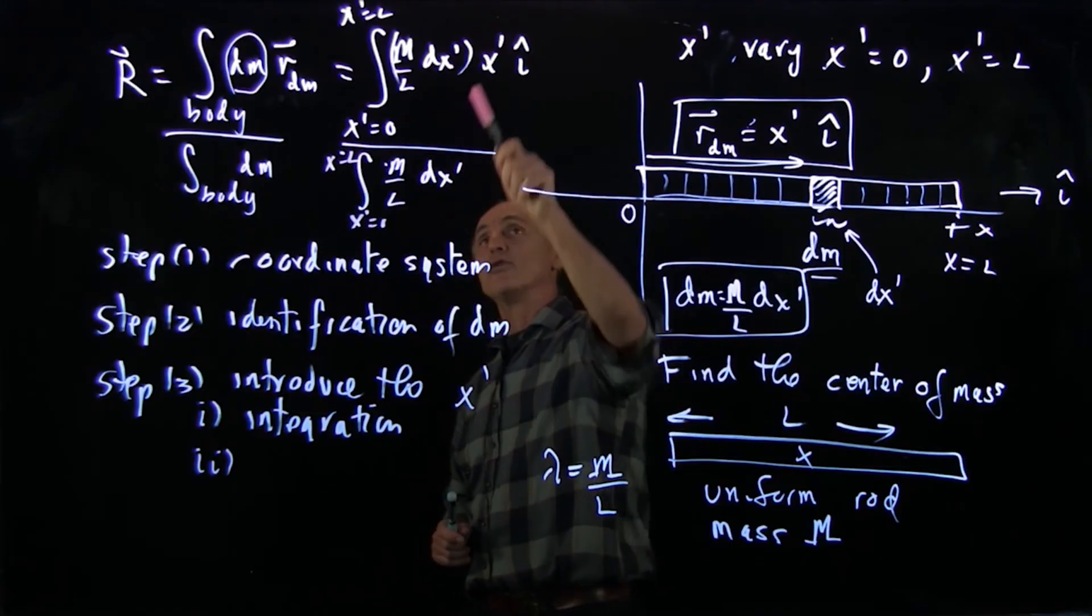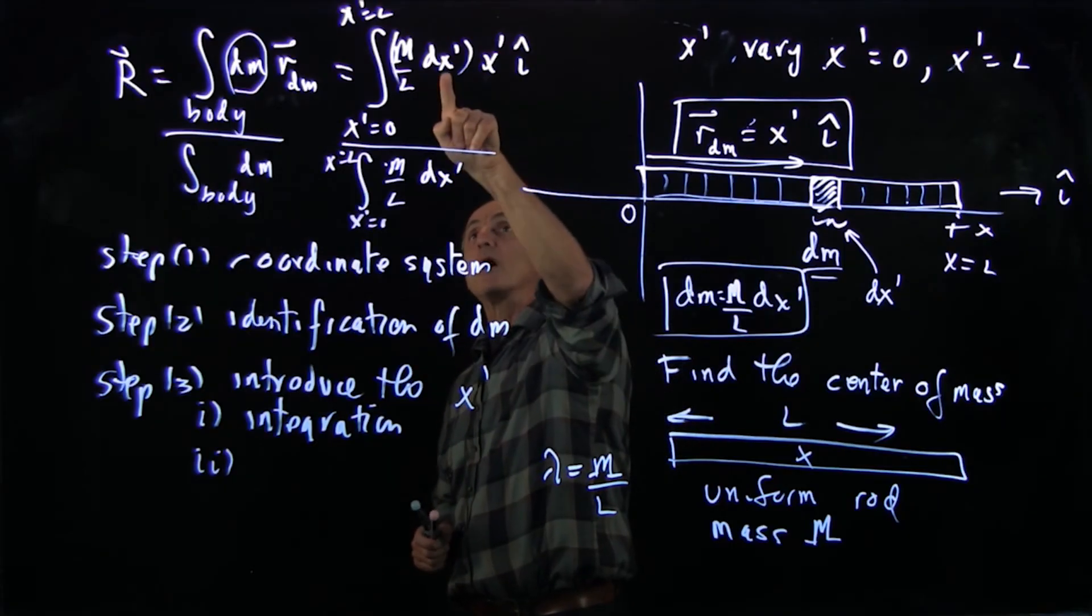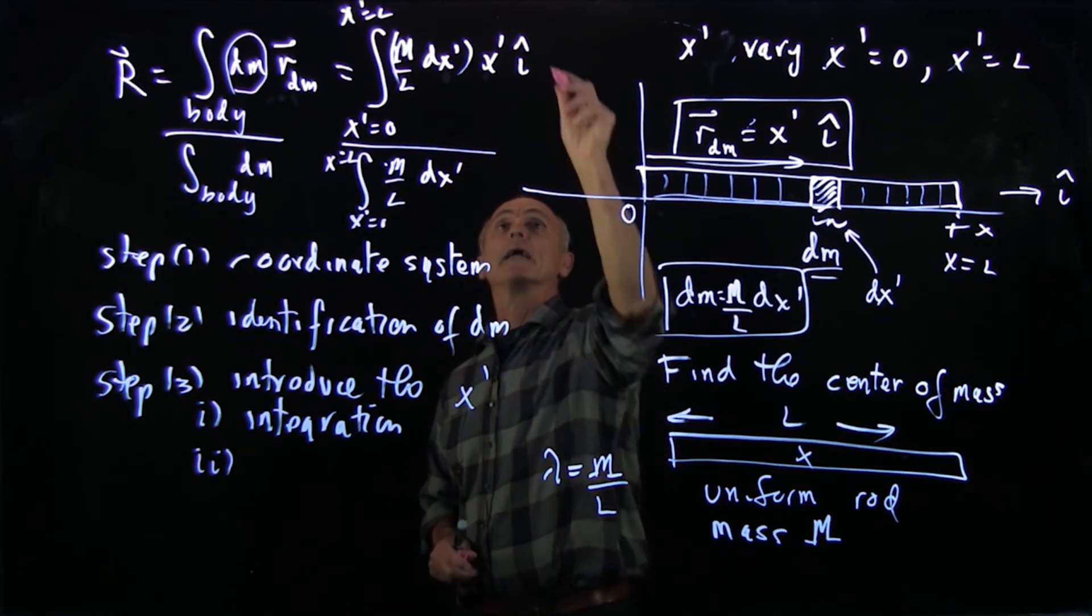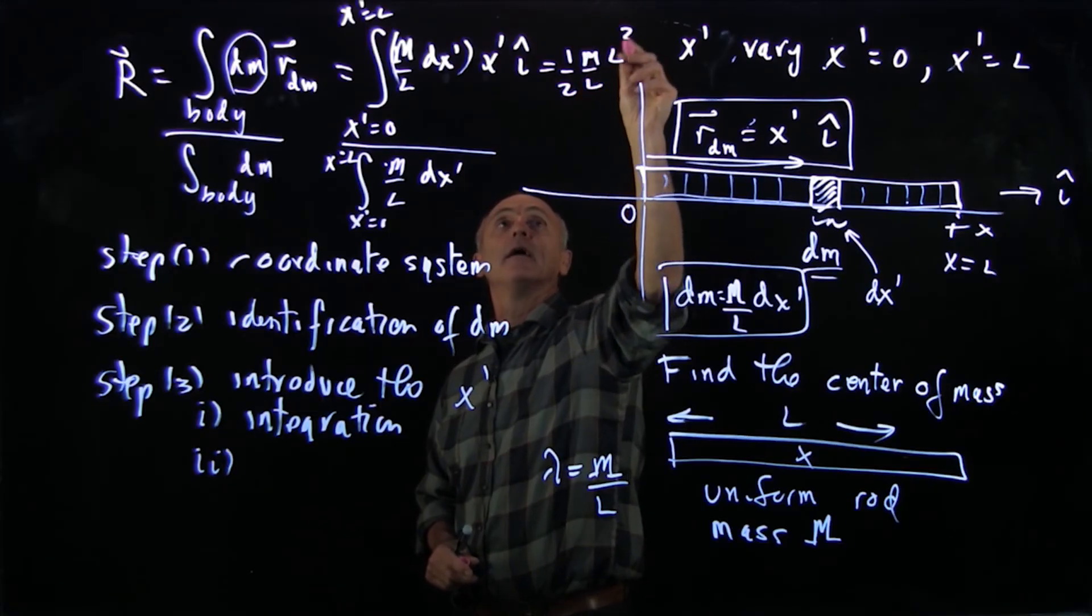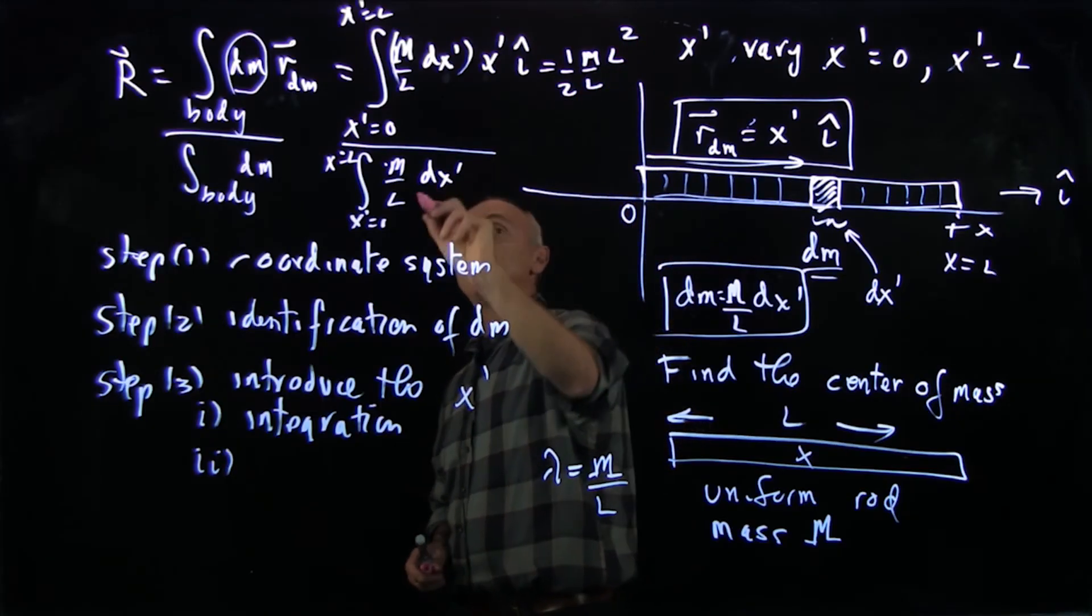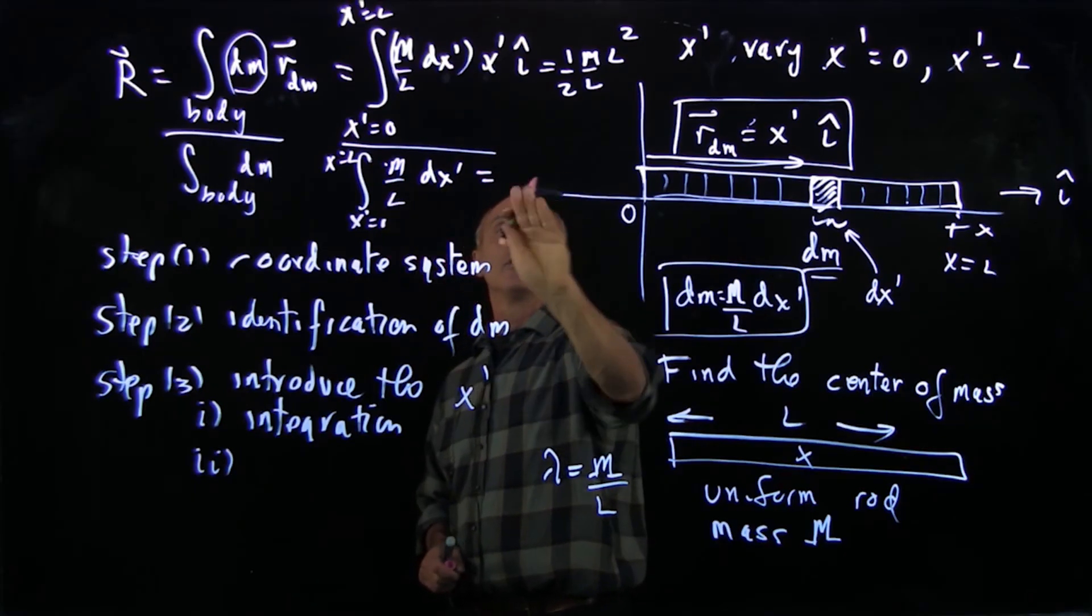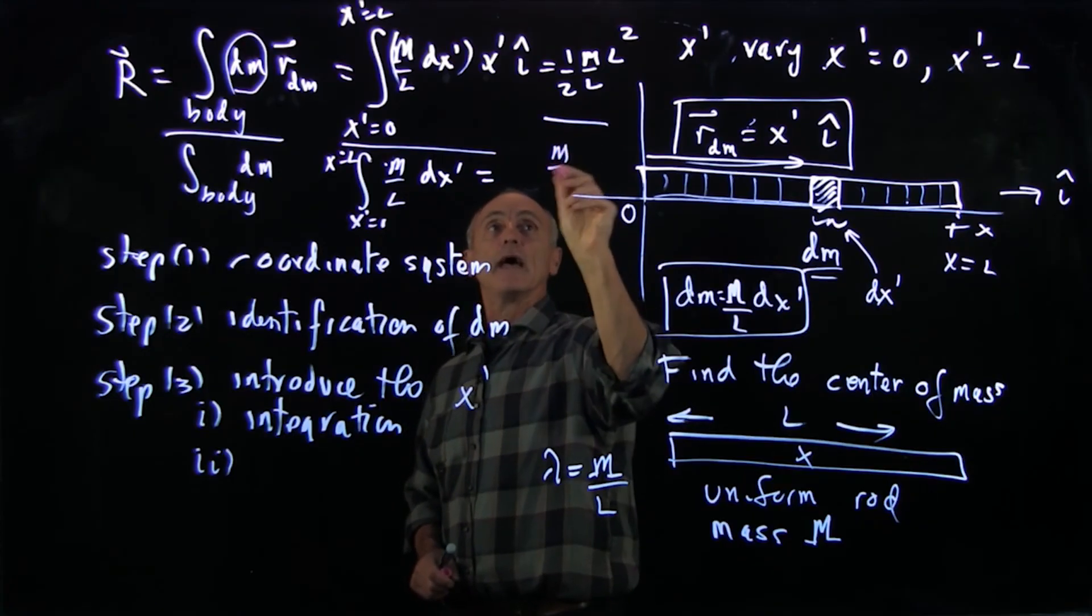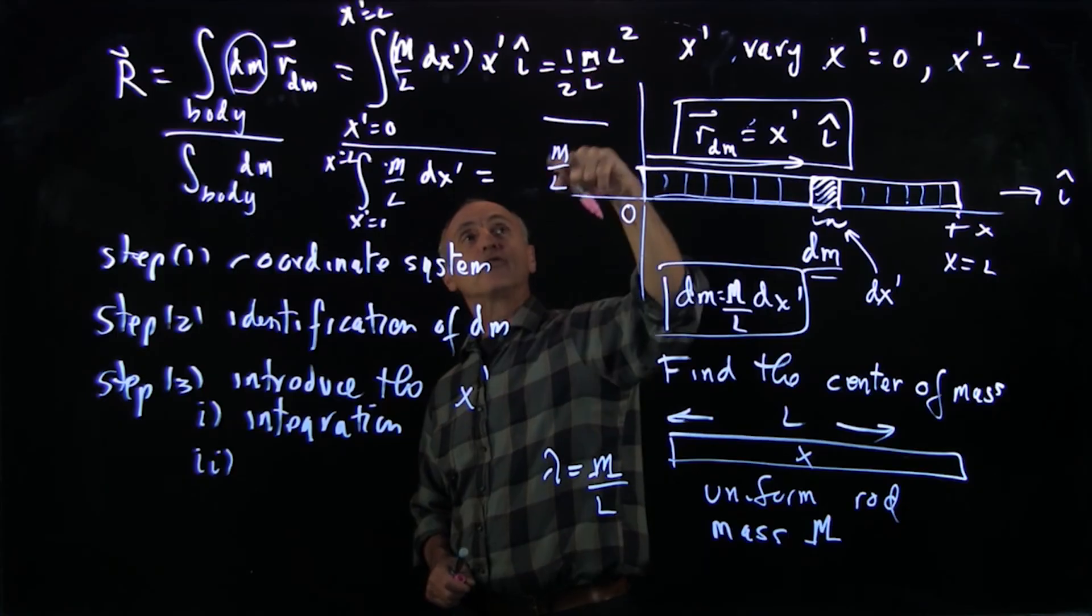Both of these integrals are now not difficult to do. Notice it's x prime dx prime. So this integral is x squared over 2. And I get one half m over l, l squared. And downstairs, dx prime from 0 to l is just l. So the downstairs integral is just m over l.